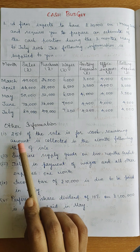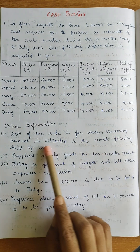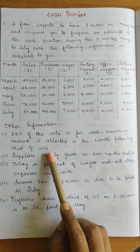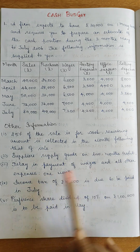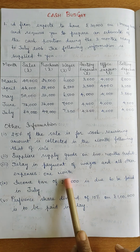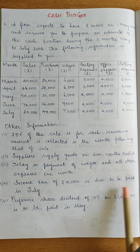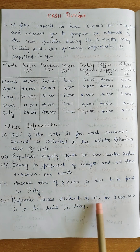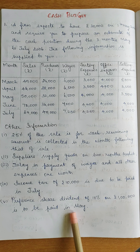Other information: 25% of the sale is for cash; the remaining amount is collected in the month following that of sale. Suppliers supply goods on 2 months credit. Delay in payment of wages and all other expenses is 1 month. Income tax of Rs. 10,000 is due to be paid in July. Preference share dividend of 10% on Rs. 1,00,000 is due to be paid in May.